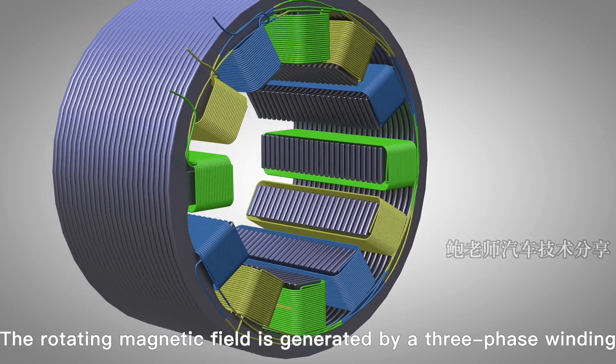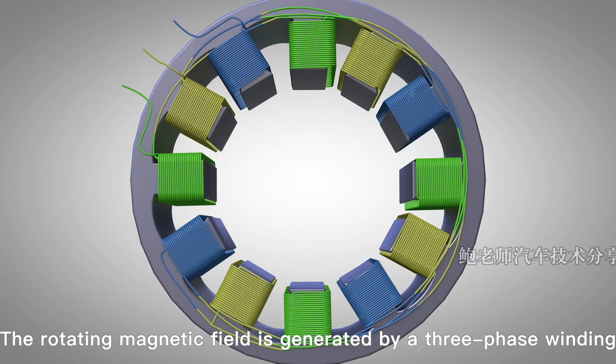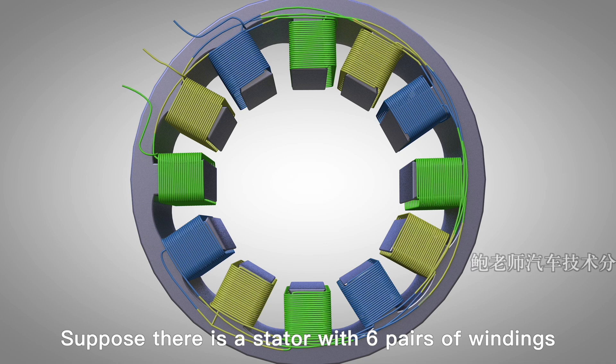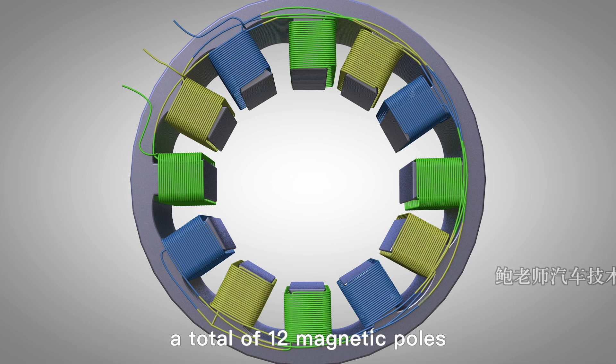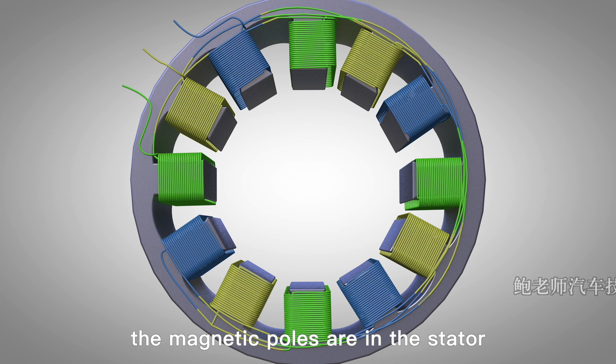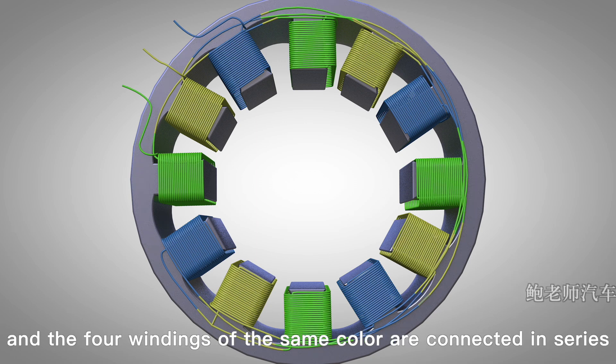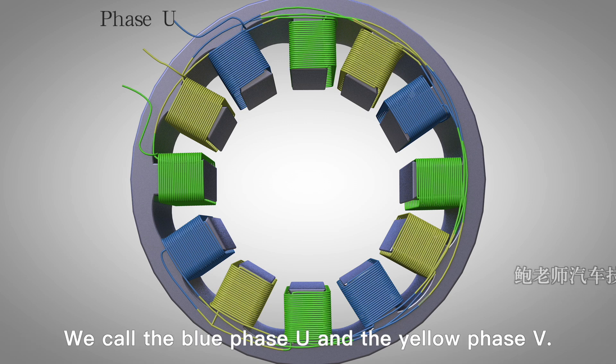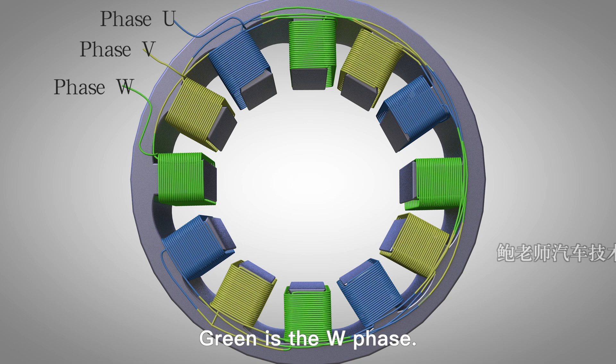The rotating magnetic field is generated by a three-phase winding. Suppose there is a stator with six pairs of windings, a total of twelve magnetic poles. The four windings of the same color are connected in series. We call the blue phase U, the yellow phase V, and the green phase W.